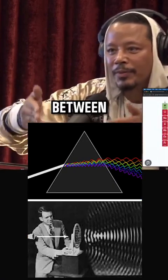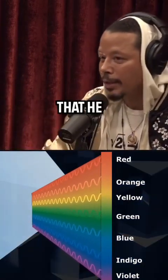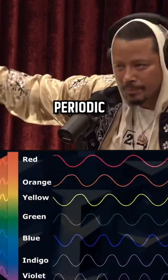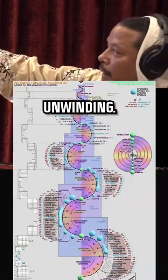There's a relationship between light and color, sound and tone, matter and shape. Walter Russell's periodic table that he put together - now you compare that to Mendeleev's periodic table and you'll see something completely different. It's unwinding.